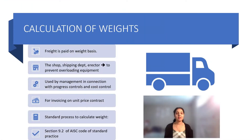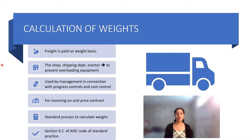The weight of finished products must be calculated for several reasons: to provide a check against original material versus actual as-built material; freight is paid on a weight basis; the shop shipping department and directors must know the weights of finished material to prevent overloading of equipment; it is used by management for progress control and cost control; and weight is used for invoicing on unit price contracts. The standard process to calculate weight is given in Section 9.2 of the AISC Standard Practice.